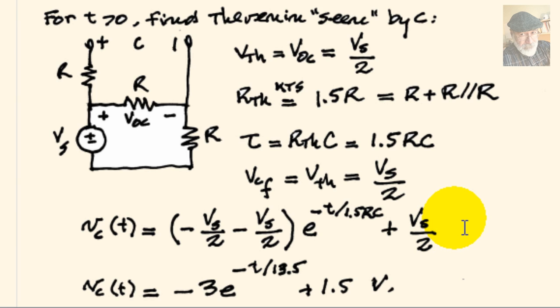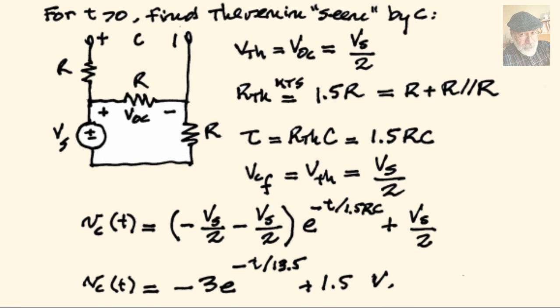If we substitute the value of the source of R and of C, then we get that the voltage in the capacitor is negative 3 exponential of negative t divided by 13.5 seconds plus 1.5 volts. And that is the solution to the second part.